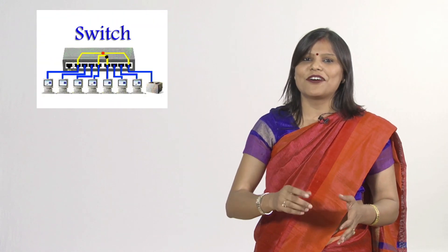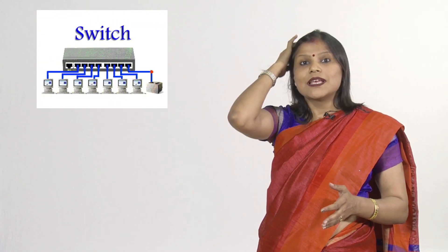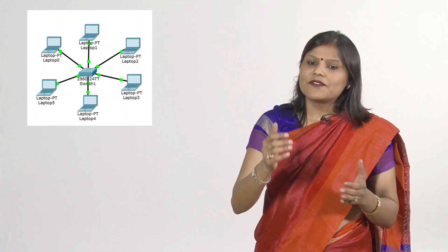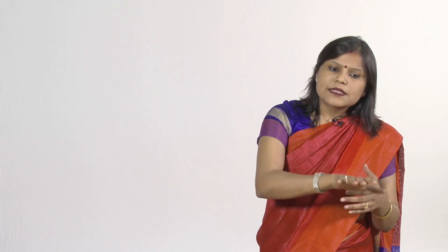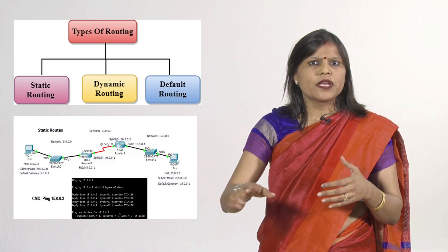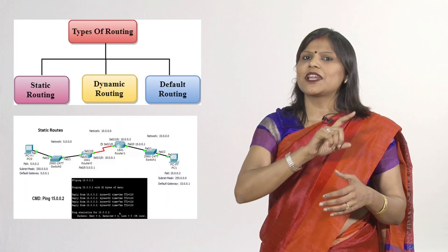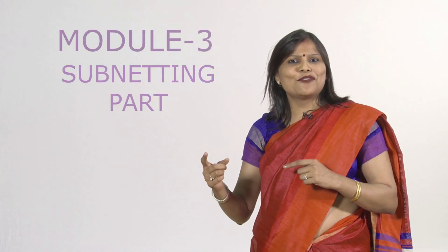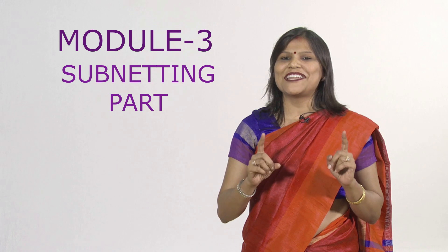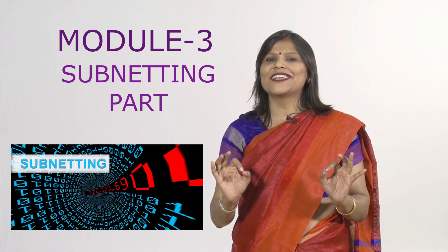In Module 2, we will start our actual simulation process in Packet Tracer. We will connect computers with the help of switches and routers in a star topology. We will start the routing part here — static routing, default routing — and touch dynamic routing with the RIP protocol. In Module 3, the subnetting part, this is my favorite topic and I hope it will be yours too.